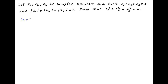The square of z1 plus z2 plus z3 can be written as z1 squared plus z2 squared plus z3 squared, plus 2 times z1z2 plus z1z3 plus z2z3.